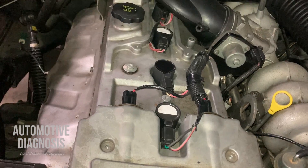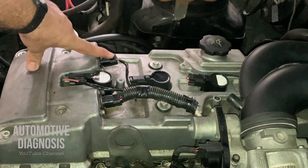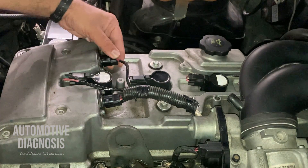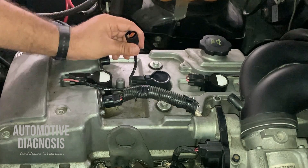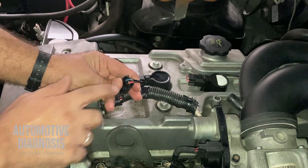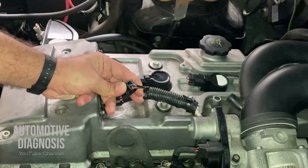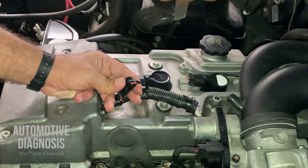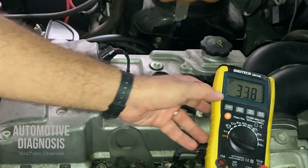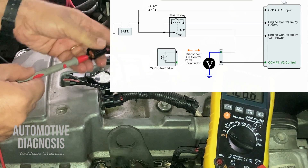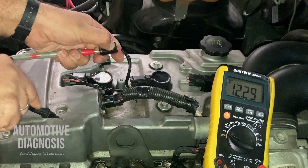Because this fault code refers to the exhaust side, we need to focus on the exhaust VVT solenoid. Here's my exhaust VVT solenoid valve. First, inspect the connector — make sure it's seated properly and not loose. Inside the connector there are two wires: the thicker one is the power supply carrying battery voltage from the fuse box, and the other is the control line connected to the ECM. As soon as you turn the ignition on, you should have battery voltage on the power supply wire.